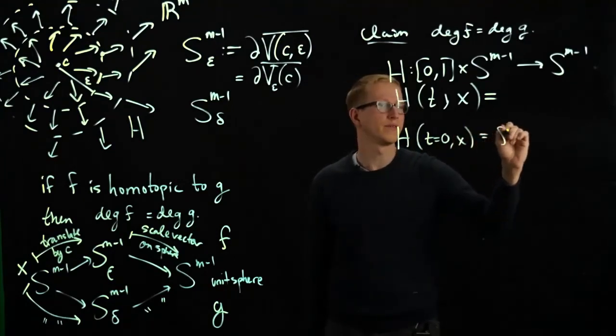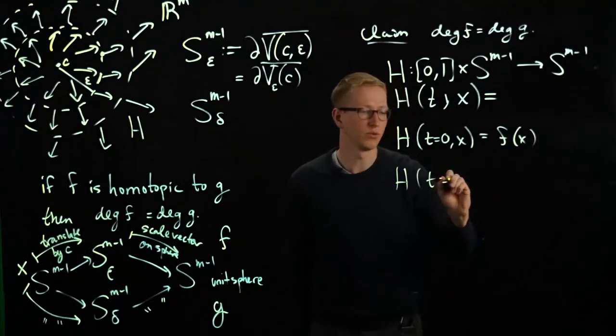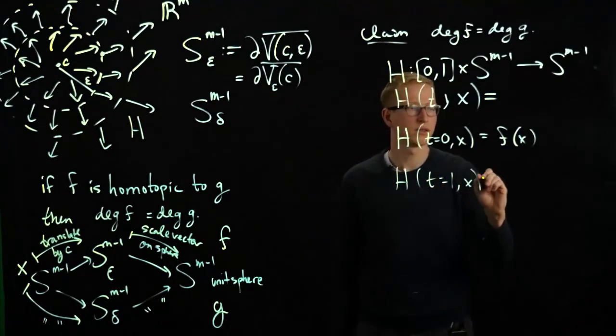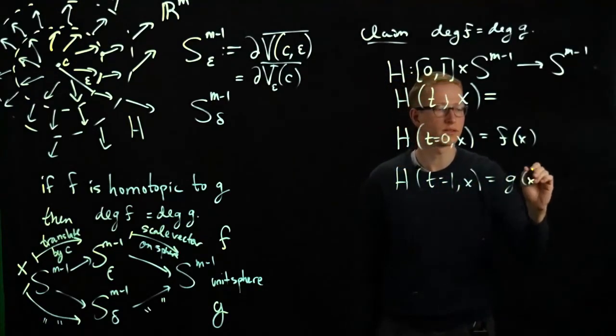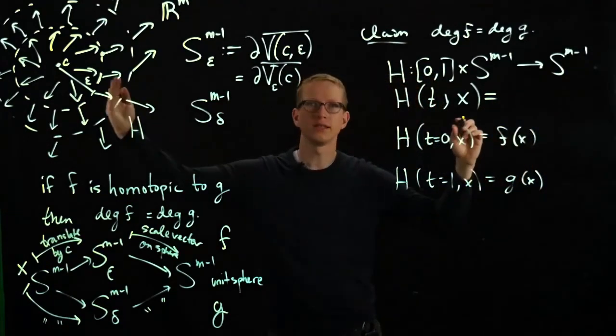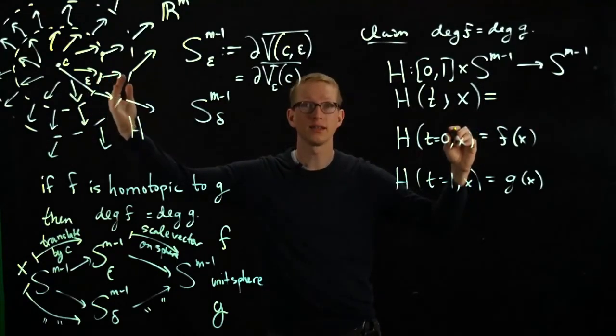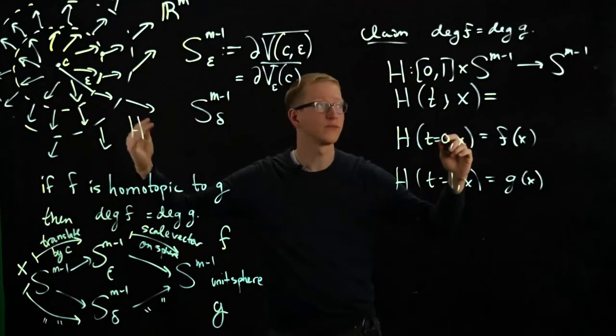And at h of t equals one, x, we will get g of x. And so at any point in time between, we've already defined what this map is at every radius, provided that it doesn't hit any other zeros, where the vector field doesn't vanish.